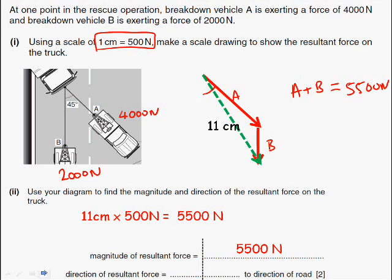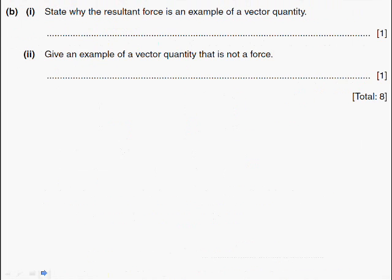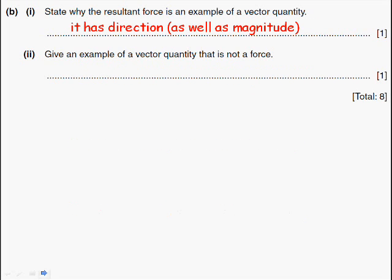If I break out the protractor now, I could measure the angle, because it does tell me in the question, from the direction of the resultant force to the direction of the road. So if I put this vertical line in and measure this angle here, I'll find it's 30 degrees. Just continue to the last part of the question. State why the resultant force is an example of a vector quantity. All vectors have direction as well as magnitude. So just the definition.